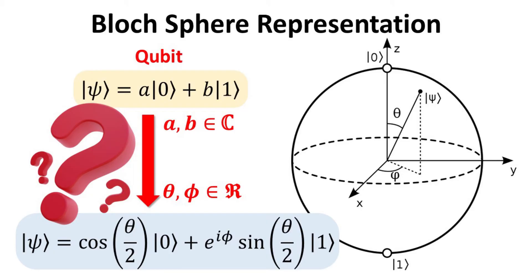The Bloch sphere is a geometrical representation of the quantum state of a qubit. It is a unit sphere with the north pole representing the zero state and the south pole representing the one state. The Bloch sphere provides a powerful visualization of the state of a qubit and is a powerful tool for understanding quantum mechanics and quantum computing.